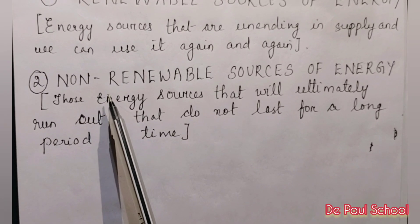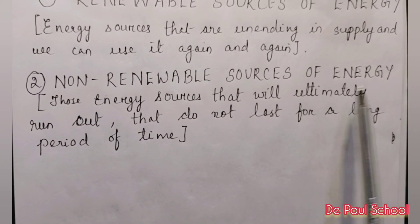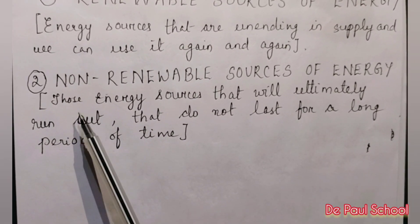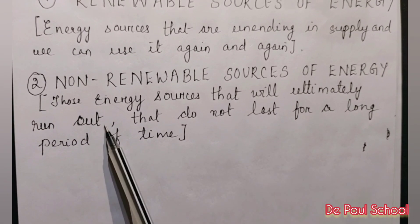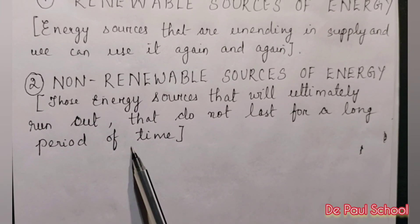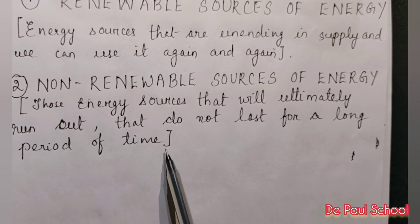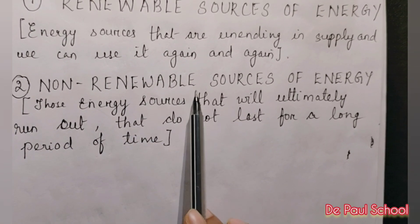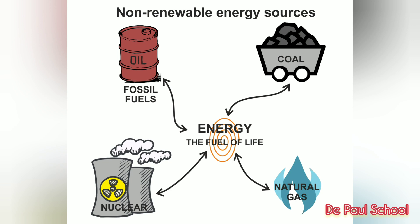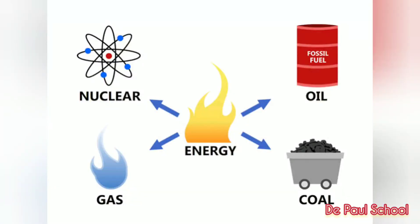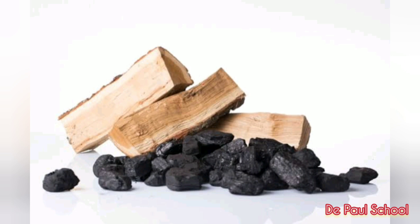Now the next source is non-renewable energy. Energy sources that will ultimately run out and do not last for a longer period of time are called non-renewable sources of energy. Examples include wood, coal, petroleum, and natural gas. These sources are present in limited amounts in nature. Thus, we need to use these energy sources judiciously.